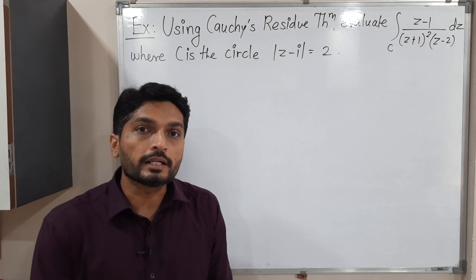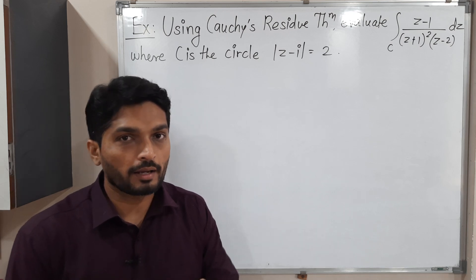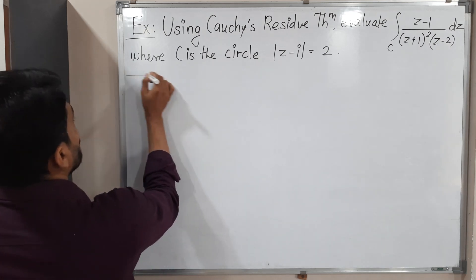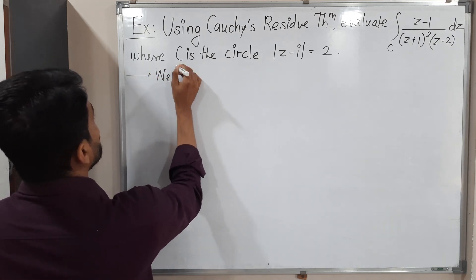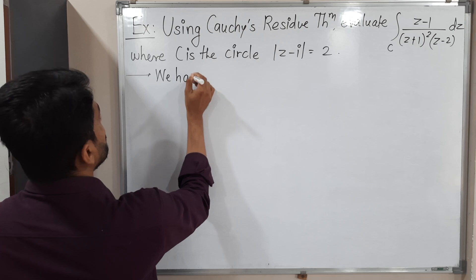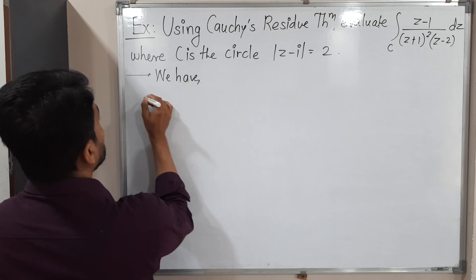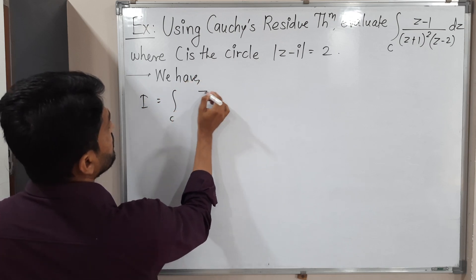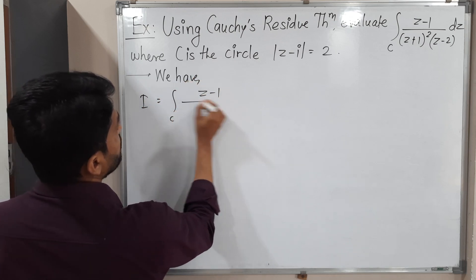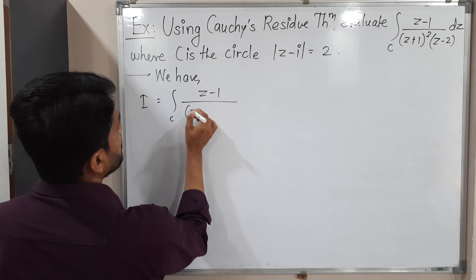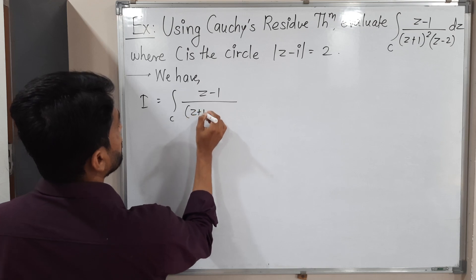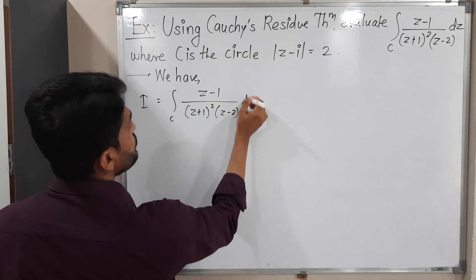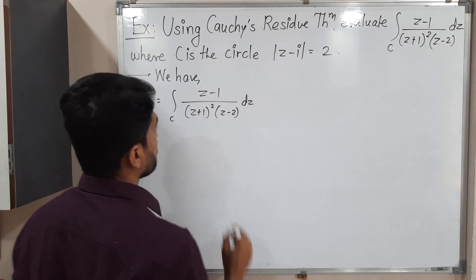So let us call the given integral as I. We have I is equal to the integral of (z minus 1) over (z plus 1) squared times (z minus 2) dz.